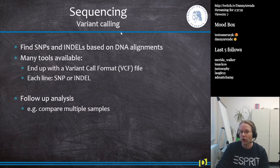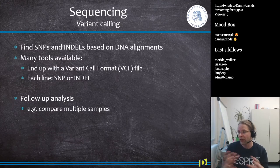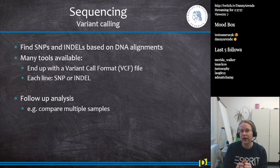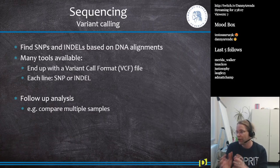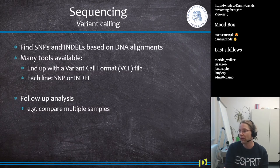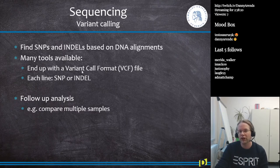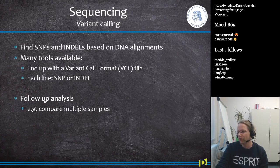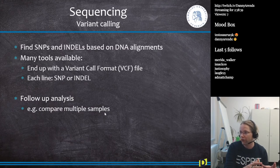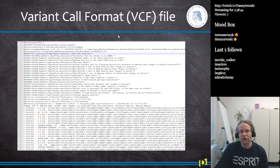The final step in the pipeline is variant calling. After trimming, alignment, accounting for known SNPs and indels, and recalibrating quality scores, we can perform SNP and indel calling to determine if the sequenced individual has any previously unknown SNPs or high-impact mutations that knock out a gene. Many tools are available, but all produce a Variant Call Format (VCF) file. Each line in a VCF file is a SNP or an indel, used for follow-up analysis like comparing multiple samples or associating SNPs with disease.